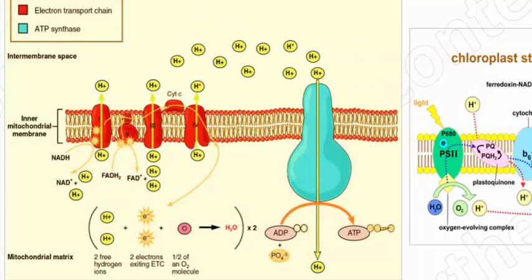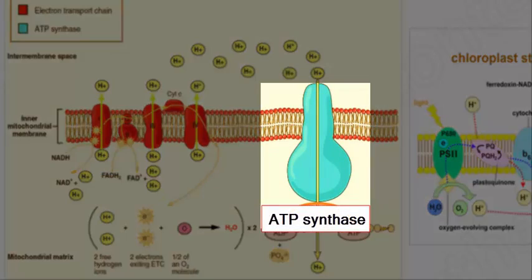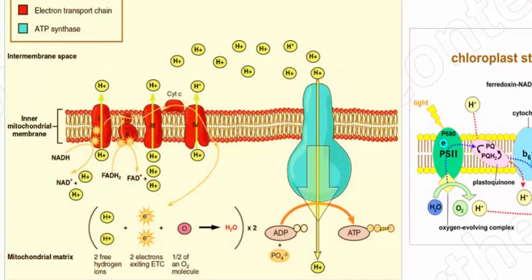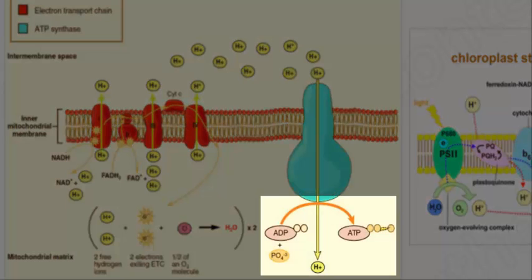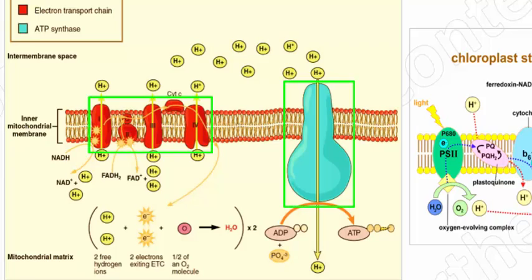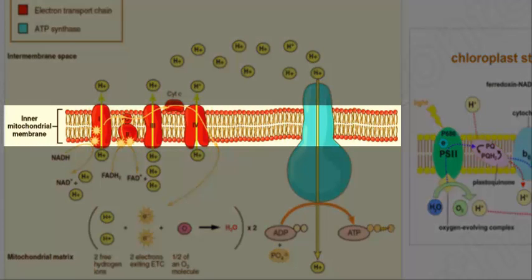Another enzyme called ATP synthase comes along and uses that established concentration gradient — that gradient of protons — to drive the production of ATP using UDP and a phosphate. This is a very key example of scaffolding, whereby the enzymes involved in a series of biochemical reactions are uniquely arranged in the plasma membrane to allow them to more efficiently perform their function.